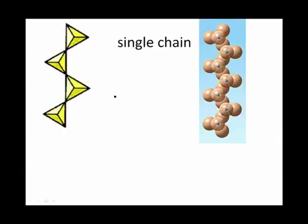Next, we have single-chain tetrahedron. The oxygen that is part of this upper tetrahedron is also part of the lower, so it's covalently bonded in both directions, making it a single chain.